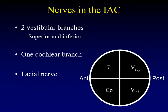Let's review the anatomy of the nerves inside the internal auditory canal. There are two vestibular branches — the superior and inferior branches of the vestibular nerve — one cochlear nerve, and one facial nerve. One of the four nerves lives in each of the four quadrants. People try to remember 'seven up and coke down' for the anterior half: the seventh cranial nerve is in the superior anterior quadrant and the cochlear nerve is in the inferior anterior quadrant. The posterior half has the superior division of the vestibular nerve on top and the inferior division below.